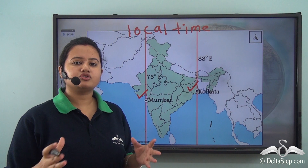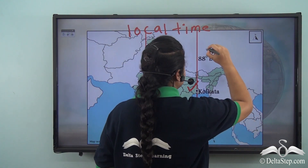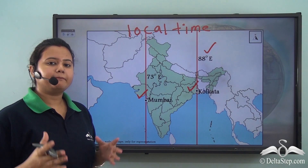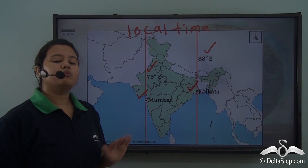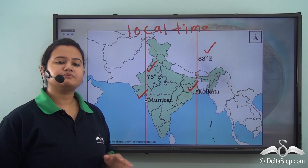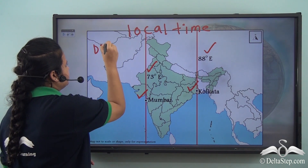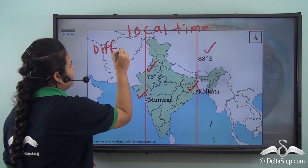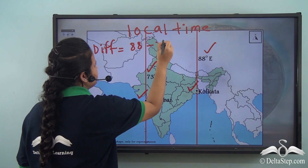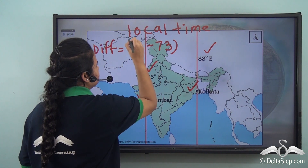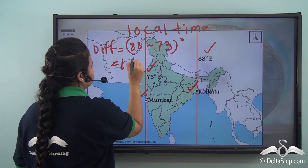The longitude that crosses over Kolkata is 88 degrees east and the longitude that passes through Mumbai is 73 degrees east. Now what is the difference between these two longitudes? The difference is 88 minus 73 degrees, that is 15 degrees.